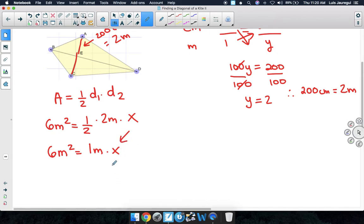Our goal is to get the X by itself. Let's divide by 1 meter on both sides of the equation. 6 divided by 1 is simply 6. Meter squared divided by meter is just meters, and 1 meter divided by 1 meter is 1, and 1 times X is simply X. So we can say that the other diagonal, diagonal 2, is equal to 6 meters in length.